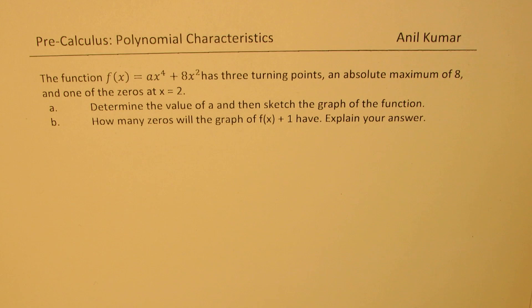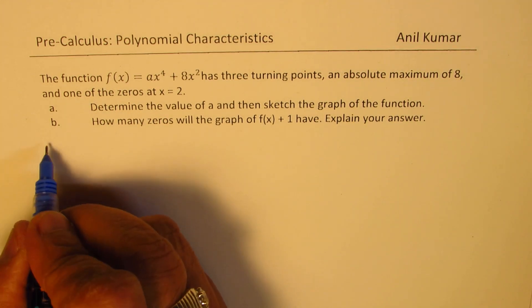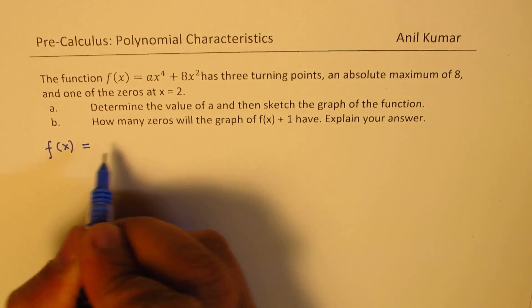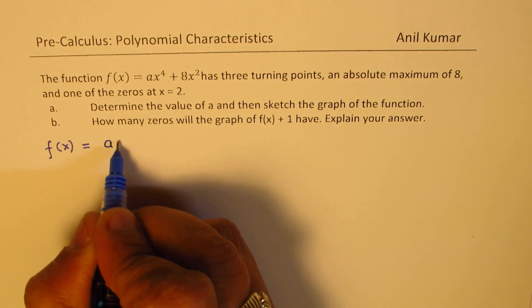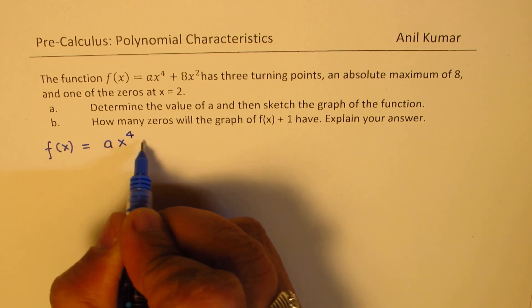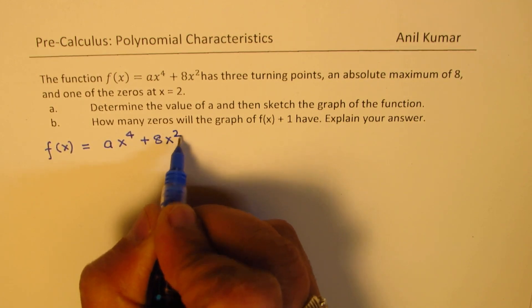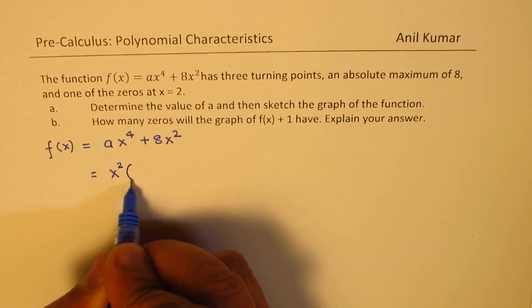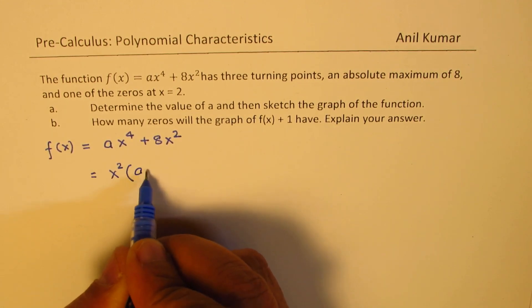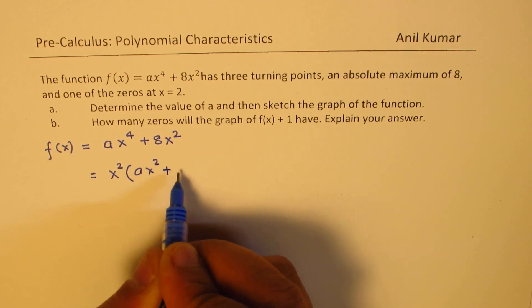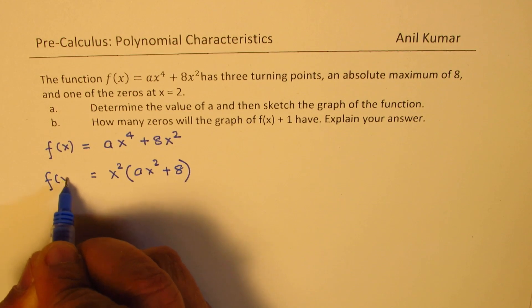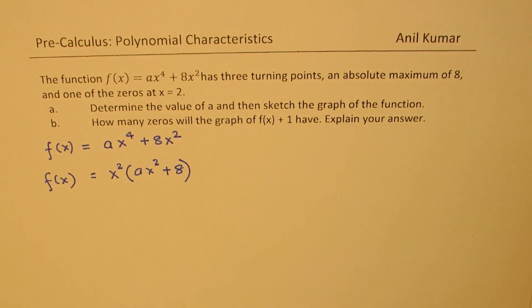You can always pause the video and answer the question. My approach here is to factor whatever we can. We are given f(x) as ax to the power of 4 plus 8x squared. We can factor x squared, so once you do that, you will get ax squared plus 8.